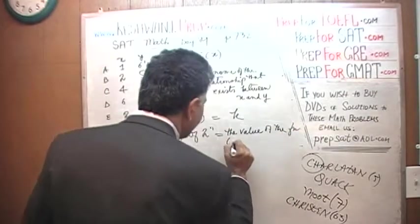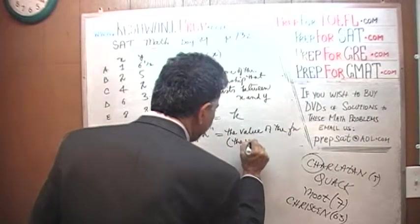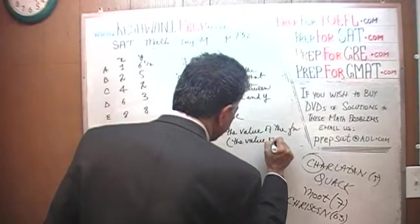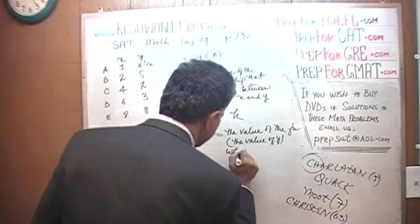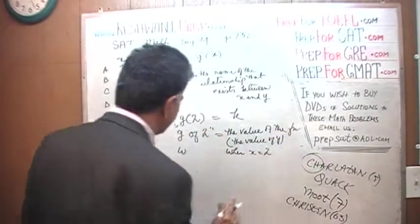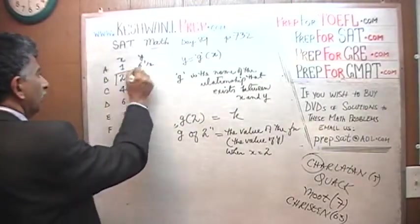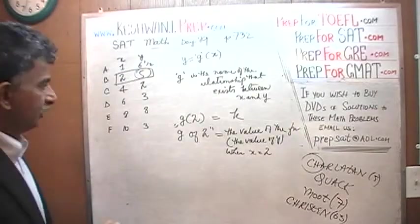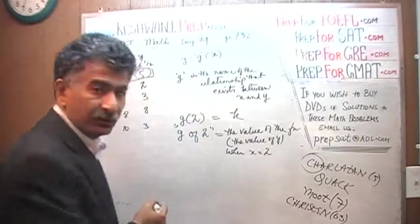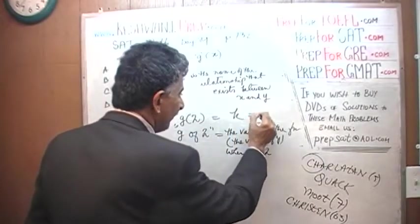When X equals 2. Well, we just found it. When X equals 2, the value of the Y is 5. So G of 2, which they are calling K, equals 5, which means K equals 5.